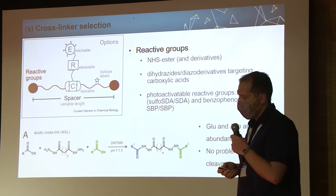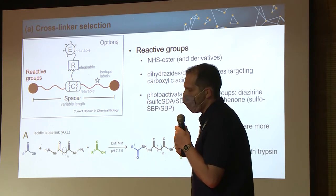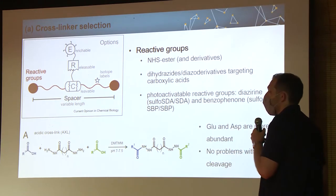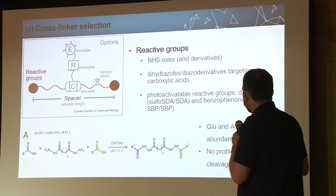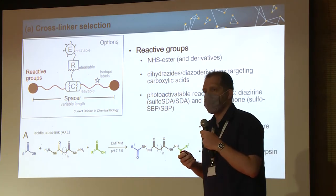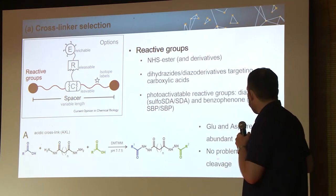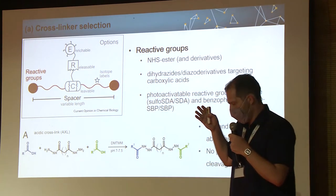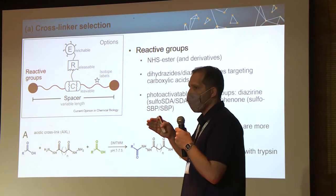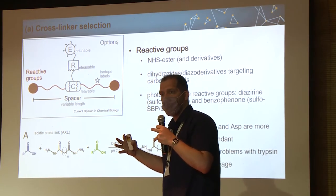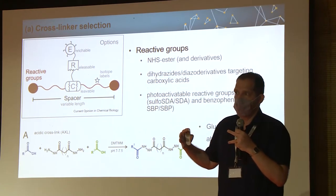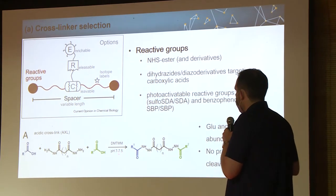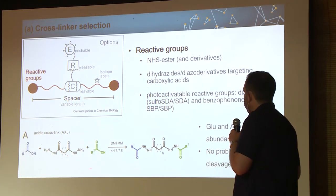We can also target carboxylic acid residues using hydrazide and azide derivatives. Glutamic acid and aspartic acid are more common in proteins than lysine residues. An additional advantage is that modifying lysine with a cross-linker prevents trypsin cleavage, producing larger peptides that are harder to work with in mass spectrometry. Acidic cross-linkers such as AXL or DMTMM target carboxylic acids instead, avoiding this problem.